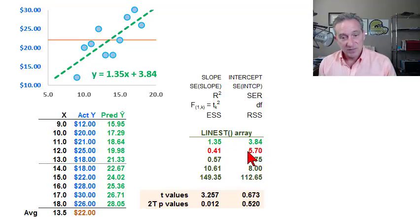The second row is the standard errors of the same coefficients that are in the first row. So if I had two independent variables, I would get another column. If I had three independent variables, then I would have four columns. Here in the second column is the $1.35 of the slope, and then I have its standard error.